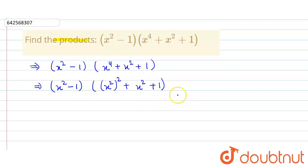We use the identity to find the product of these two. The identity is a minus b into a squared plus b squared plus ab, which equals a cubed minus b cubed.